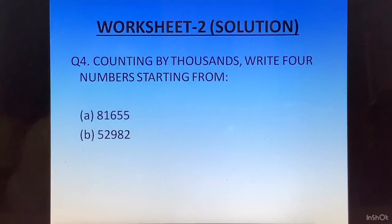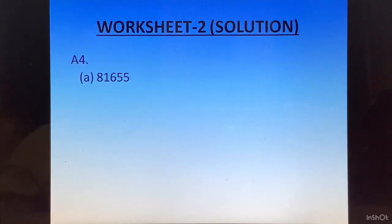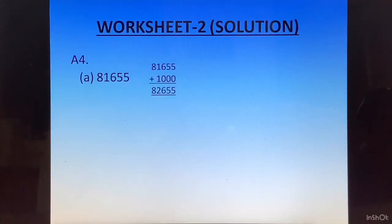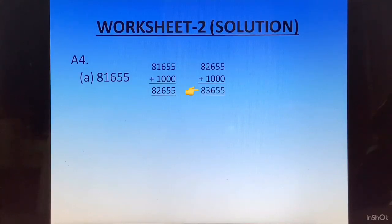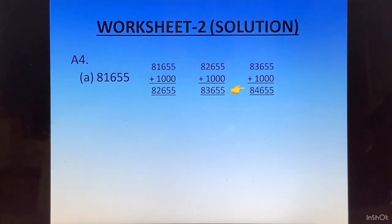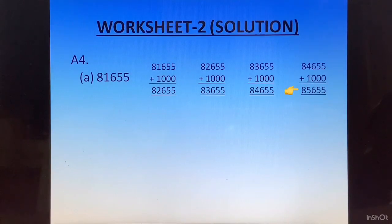Question number 4: counting by 1000s. Write 4 numbers starting from 81655. We add 1000 to get 82655, then 83655, then 84655, and finally 85655. We stop here because we have got our 4 numbers and write the answer like this.